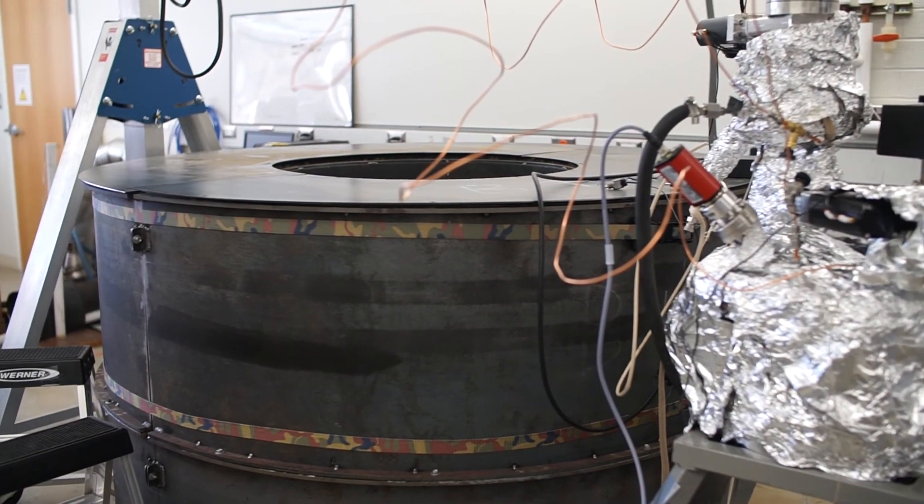We have molecules that we introduce to the vacuum chamber. They're hit by this rotor, and then they are able to break apart. Understanding that process then lets us know what the original compound might have been.